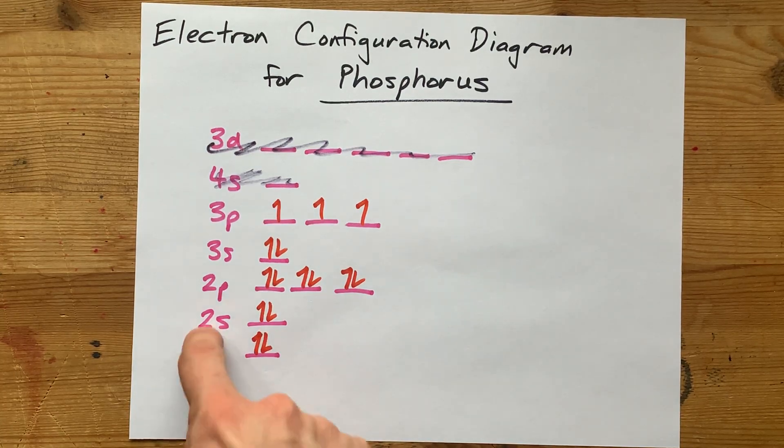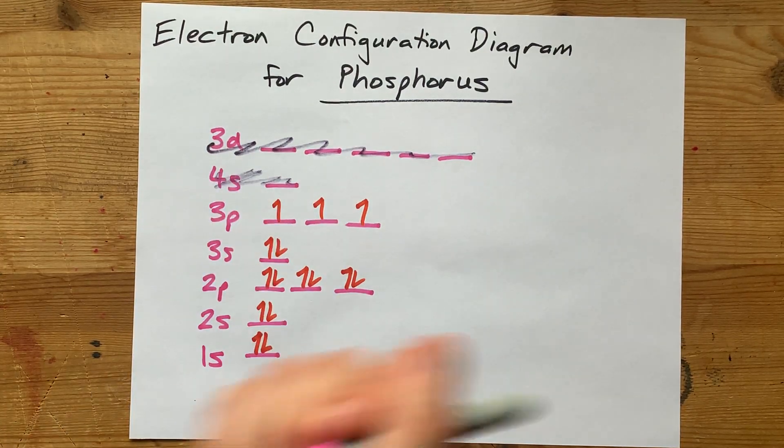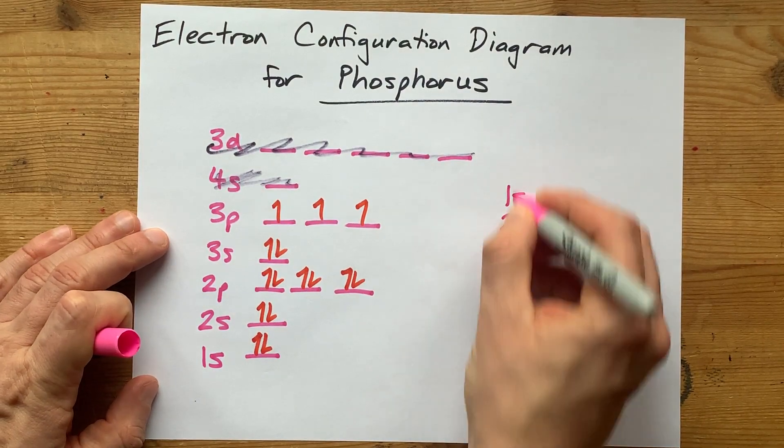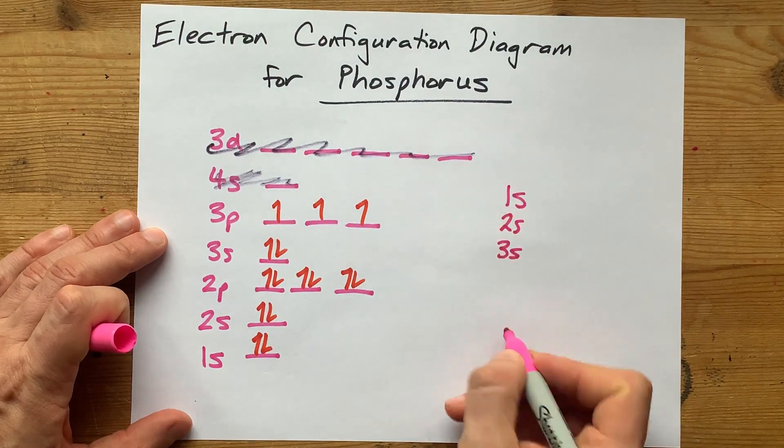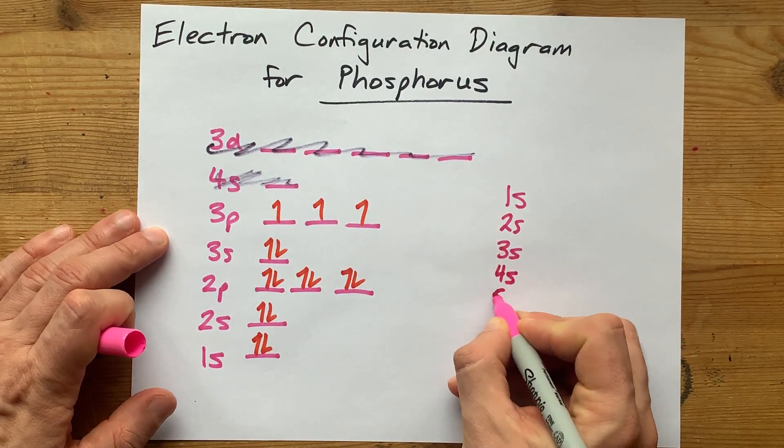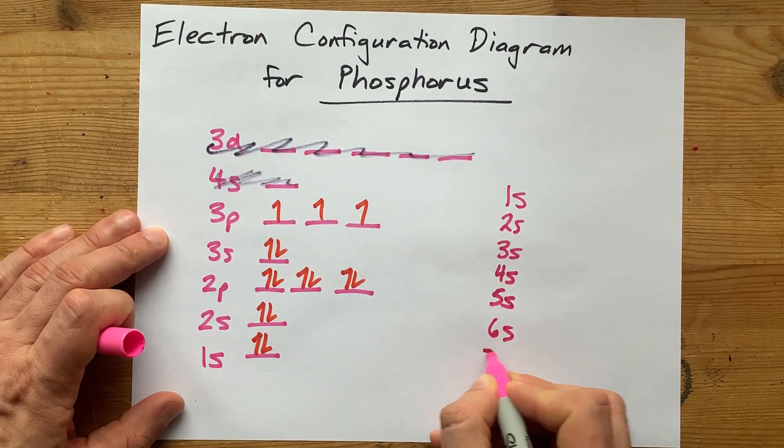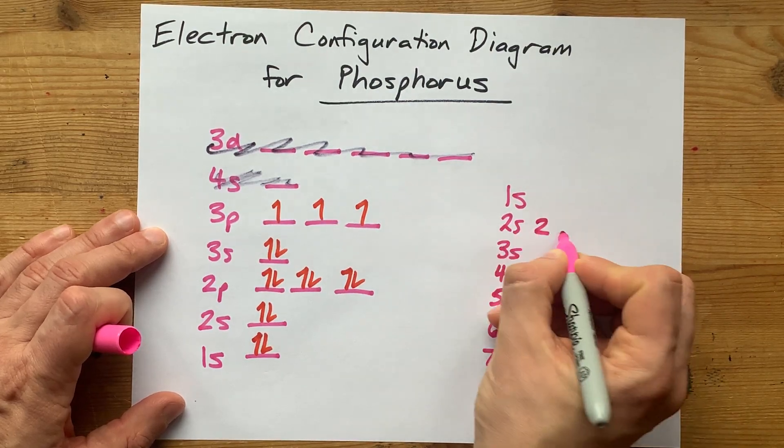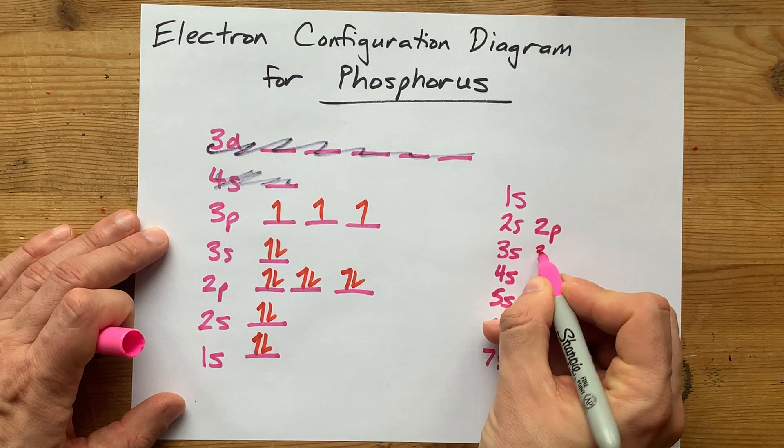Do you want to know how I memorized the order that these went in? Yes, I have a method for that. The answer is, list all of your S's from 1 up to like 7, vertically like this. Then, starting with 2 in the same row, list the P's right beside that.